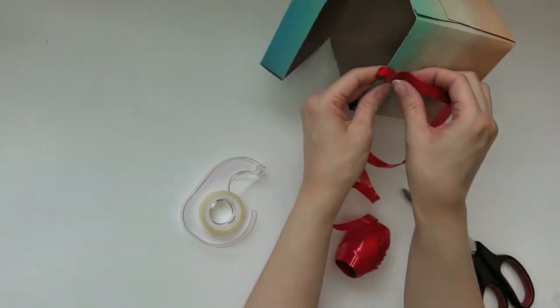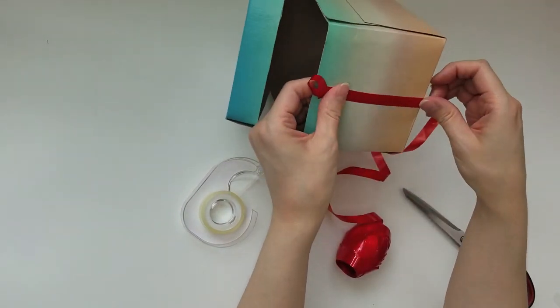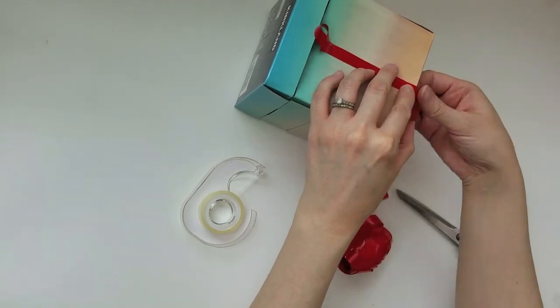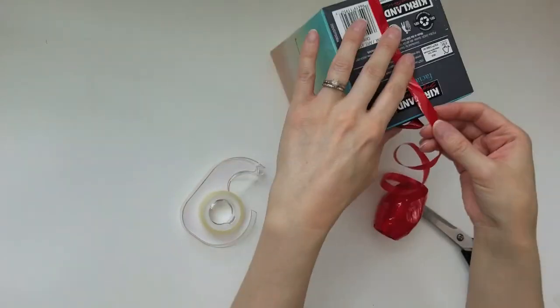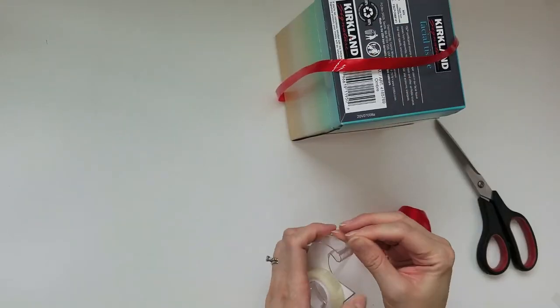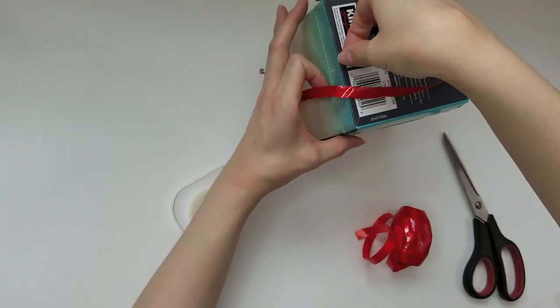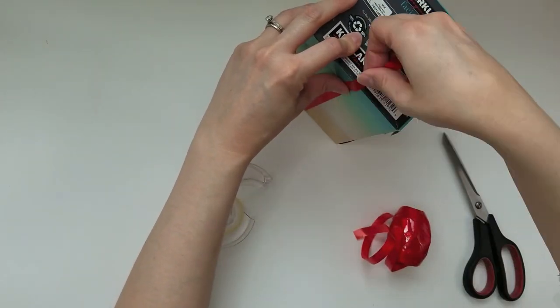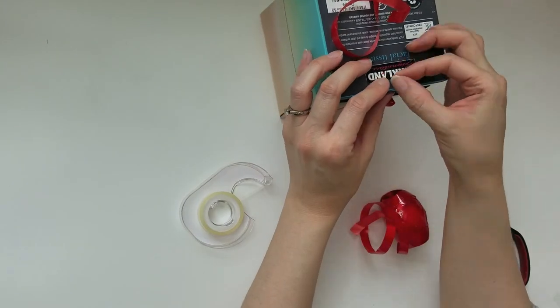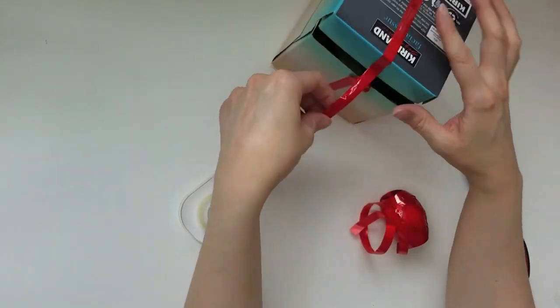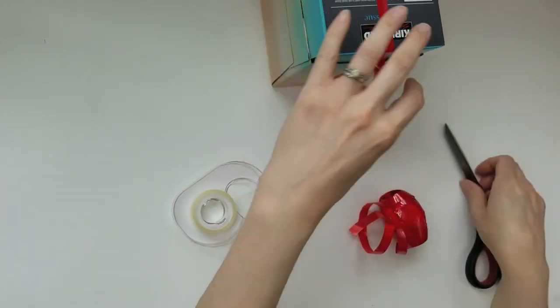Next, take some ribbon, make a loop on one side and tape it to the opening on the front. Wrap the ribbon around, taping as you go. And then leave a tail at the end. We're going to loop that tail into the front.